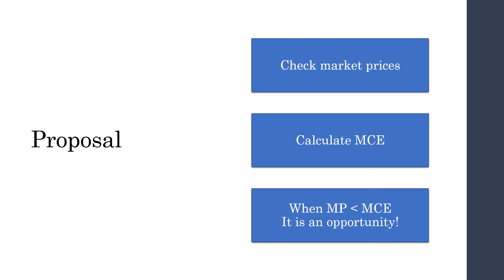My proposal is quite simple and very effective: continually check for market power prices, then calculate the marginal cost of expansion. If the market prices are below the marginal cost of expansion, there is an opportunity to be considered. Plain and simple.